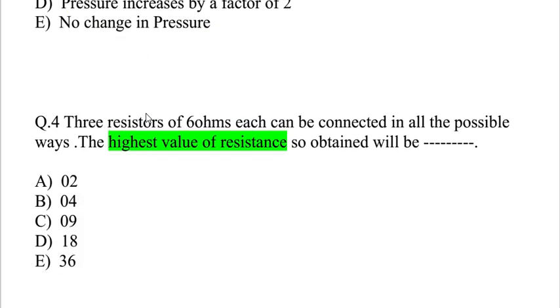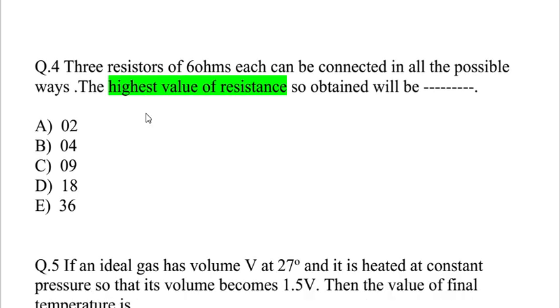Question 4: Three resistors of 6 ohms each can be connected in all possible ways. The highest value of resistance obtained will be? These types of questions ask about the highest or lowest value when connecting resistors or capacitors. If you connect the three 6-ohm resistors in series, the maximum resistance will be 6 plus 6 plus 6 equals 18. This is our correct option. If we connect them in parallel, then the lowest value is possible, which is option 2.